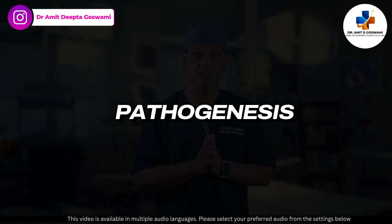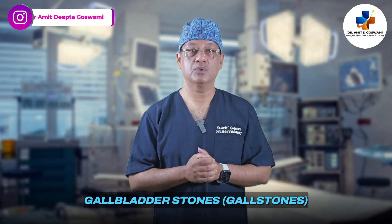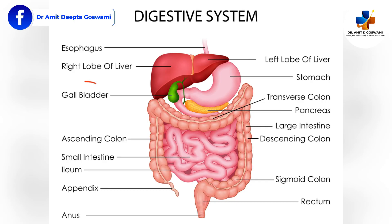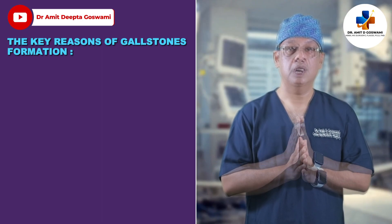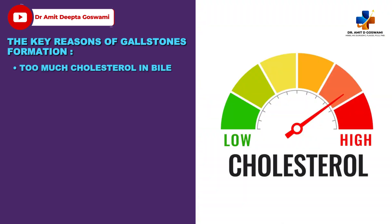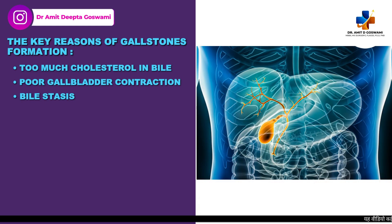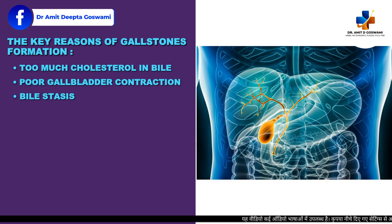First, pathogenesis — that means the process of formation of stones. Gallbladder stones form inside the gallbladder, a small pear-shaped organ below your liver that stores bile. These stones are mostly made of cholesterol or bilirubin. Key reasons for gallstone formation include too much cholesterol in bile, poor gallbladder contraction resulting in slow emptying, or bile stasis when bile sits too long and crystallizes.